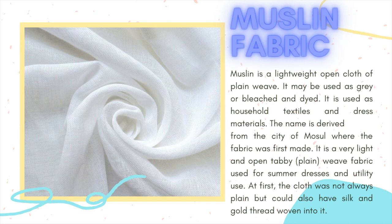Muslin fabric. Muslin is a lightweight, open cloth of plain weave. It may be used as gray or bleached and dyed, and is used as household textiles and dress material. The name is derived from the city of Mosul, where the fabric was first made. It is a very light and open tabby plain-weave fabric used for summer dresses and utility use. At first, the cloth was not always plain but could also have silk and gold thread woven into it. As the ability to spin yarns of greater fineness developed, cotton was used more readily than silk.